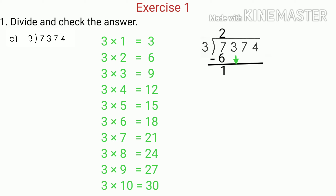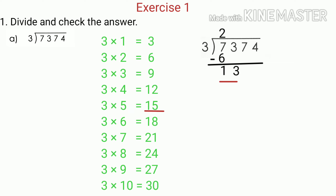Now we bring down the next digit, that is 3, making the number 13. Since 13 is greater than 3, we divide 13 by 3 — finding how many times of 3 is equal to or nearest to 13. We know that 4 times 3 is 12 and 5 times 3 is 15. Since 15 is greater than 13, 12 is nearest to 13. So we consider 4 times 3, which equals 12, and write 4 as the quotient above 3. We write 12 below 13 and subtract — 13 minus 12 gives us 1.